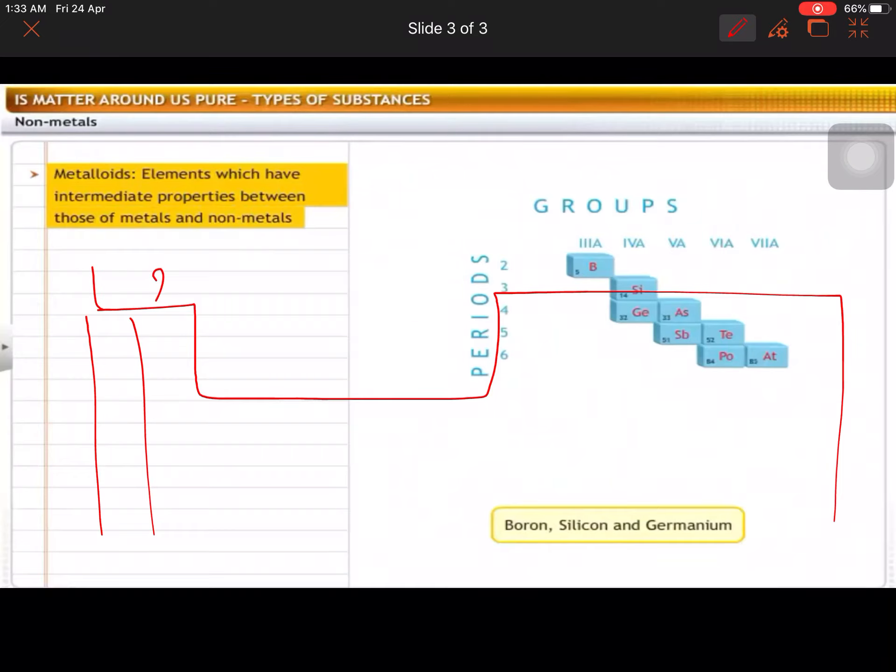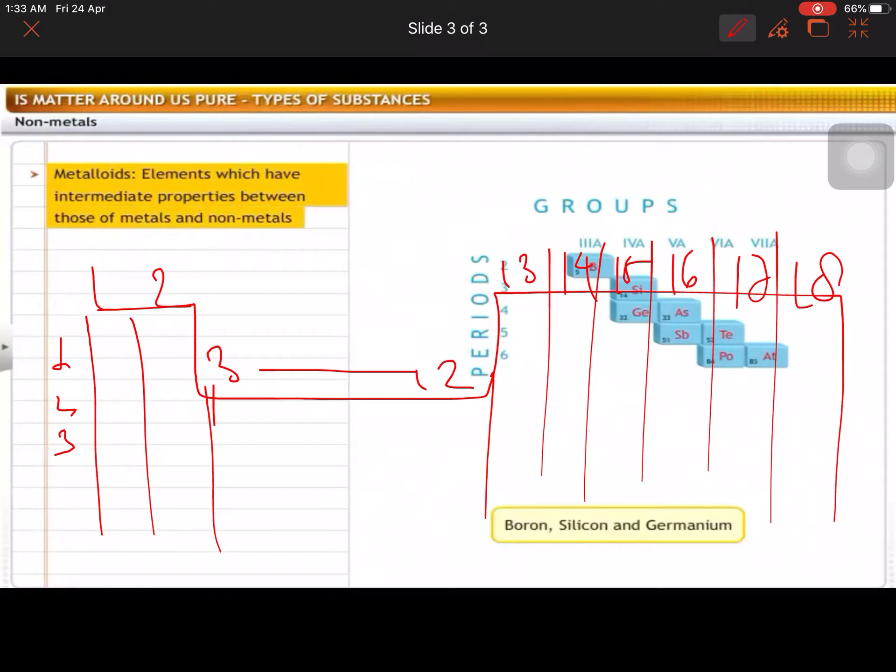The periodic table has 18 groups: Group 1 and 2, then Group 3 to 12 here, then Group 13, 14, 15, 16, 17, and 18. There are 18 groups and 7 periods for discussion. In this entire periodic table, we'll discuss all the elements of the earth. These groups are made here. You have to discuss them in this group. Remember, from here to here, all are called metals. All these are metals - Group 1, 2, and towards 13.